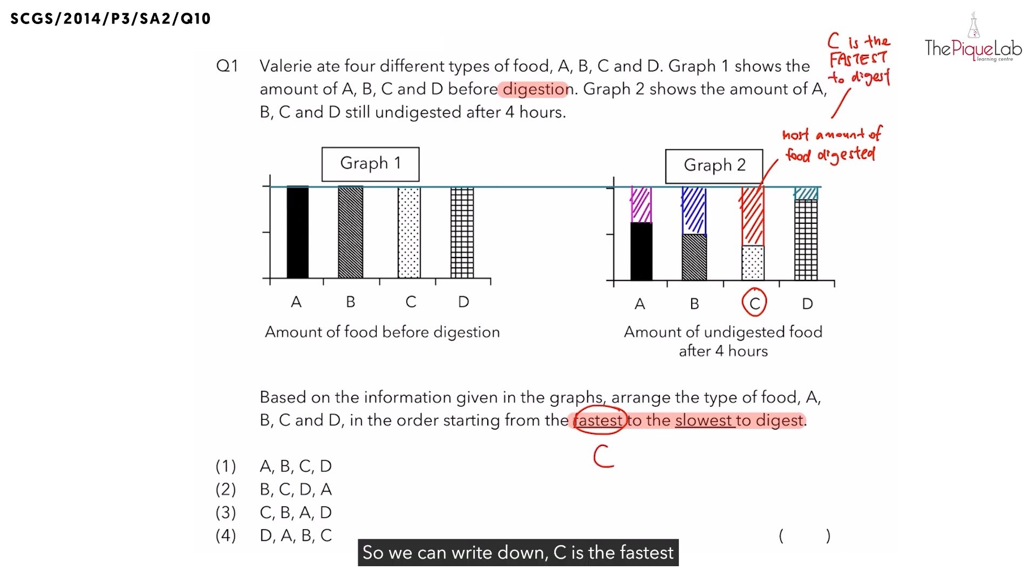So we can write down C is the fastest, followed by B, and then A. And lastly, the slowest to digest must have been D. Because D has the least amount of food digested, as a result, we know that D must have been the slowest to digest.